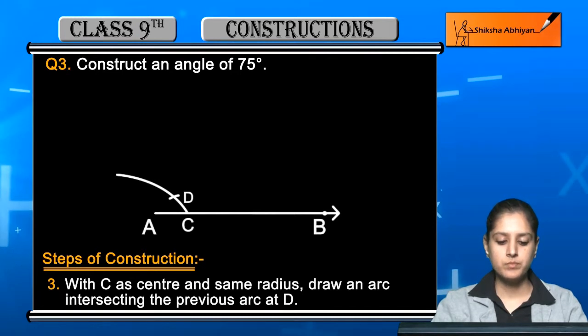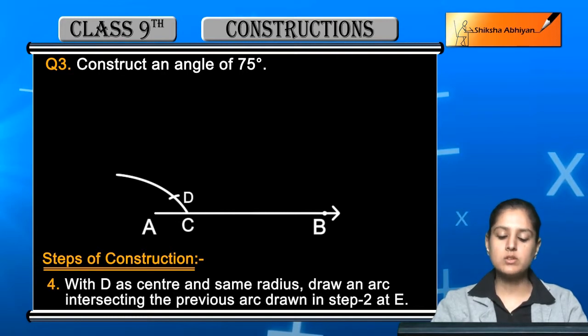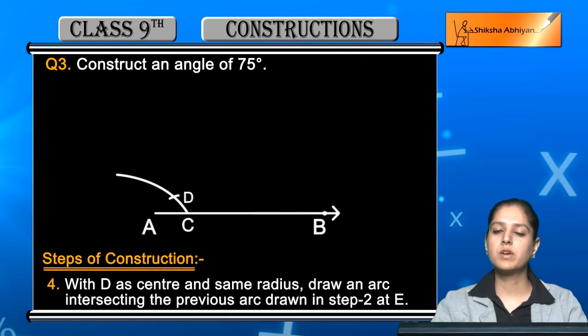Next step is, with D as center and same radius, draw another arc intersecting the arc drawn in step 2 at E. Now you have to take D to center and keep that radius which we had in the last step, and you have to cut another arc to the second step, and where it will intersect, you will have point E.